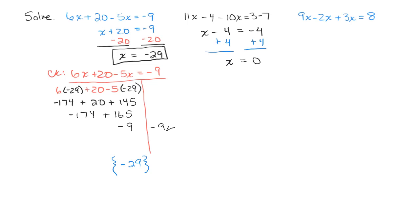And this one's really easy to check. You could probably do it in your head. If you put in 0 for x on the left-hand side, you'll get 0 minus 4 minus 0. So you get negative 4, and the right-hand side, 3 minus 7 is negative 4. So that one should be easy to check for you. And the formal way of writing the solution is to put the 0 in braces.